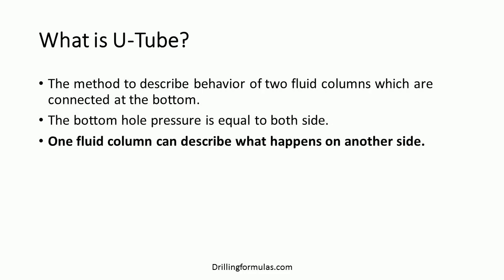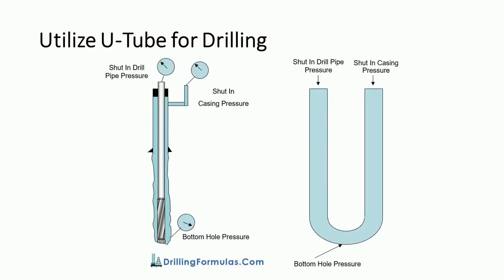the pressure at this point is equal on both sides. One fluid column can be used to describe the behavior of another column, which we will demonstrate later in this video. One side of the U-tube can be considered as a string of pipe, such as drill pipe and tubing, inside a wellbore, where fluids are able to pass inside the string of pipe.